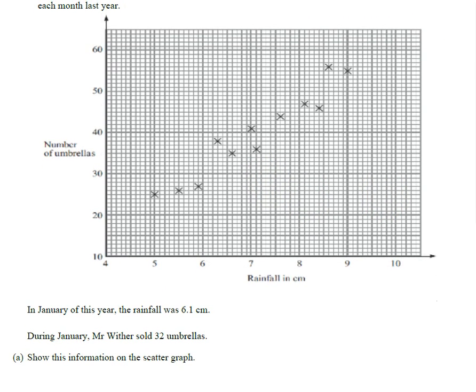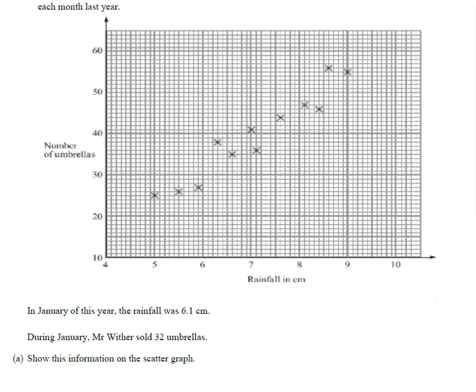In January of this year the rainfall was 6.1, during January Mr. Withers sold 32 umbrellas, so let's plot this.